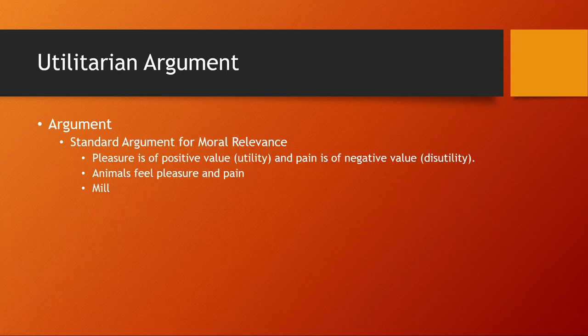So the standard way utilitarians argue for animals being morally relevant — and this is not universal, as every utilitarian philosopher seems to differ — here's a common approach. Many utilitarians, such as John Stuart Mill, argue that pleasure is a positive value — they call this utility — and pain is of negative value — disutility — or you can go generically with happiness and unhappiness. Since animals feel pleasure and pain, they would play a role in the calculation of utility, and hence would be relevant beings. Mill explicitly includes sentient beings within his scope of morality.